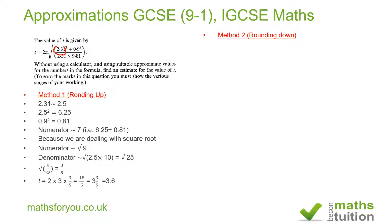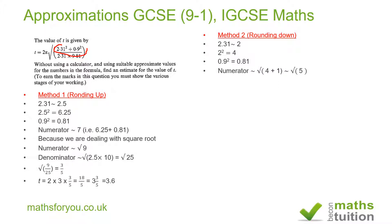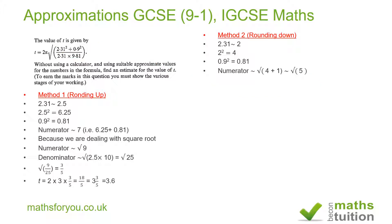For Method 2, I'm rounding down. So I say 2.31 is approximately equal to 2. If I square 2, I get 4. Now 0.9 squared is 0.81, and I make that approximately 1. So the numerator becomes the square root of 4 plus 1, which is the square root of 5. For the denominator, 2.31 is taken as 2, and 9.81 is made equal to 10.